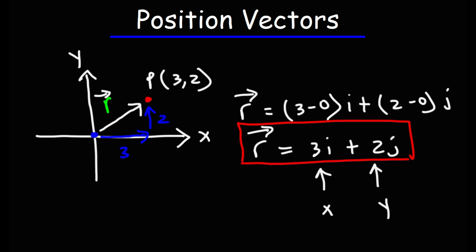So that's how you could find a position vector. Remember it starts at the origin and it's directed towards the point of interest. Let's try another example but with a 3D coordinate system.